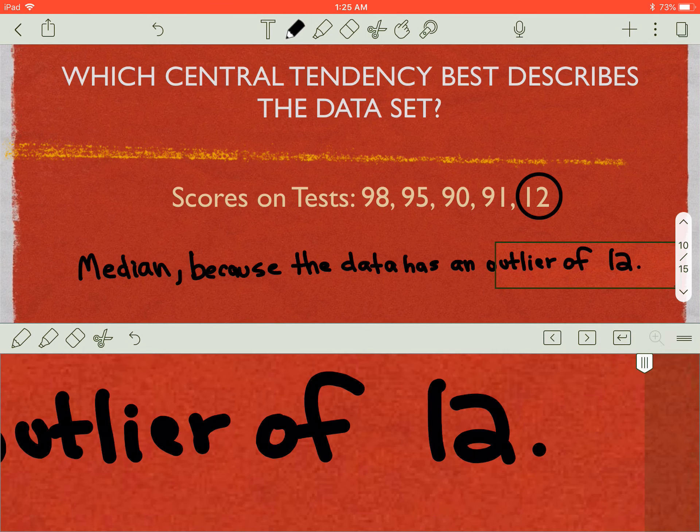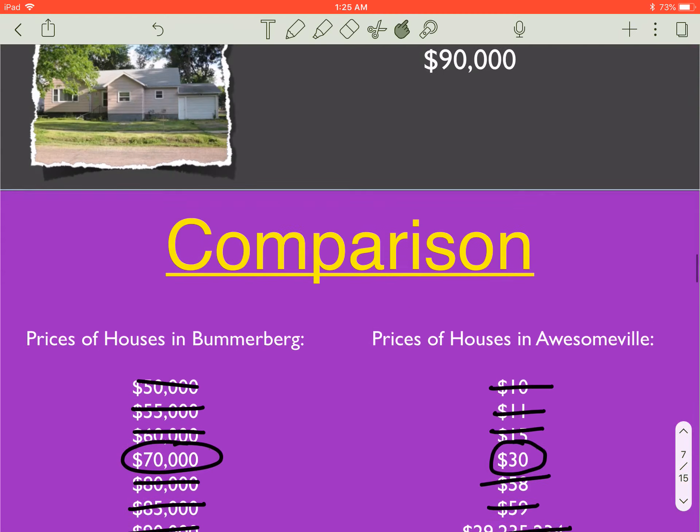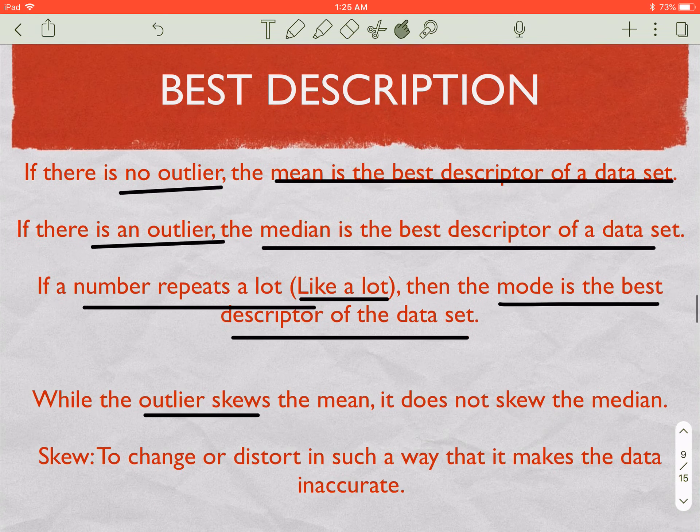And that outlier skews the mean, so we can't use the mean, so we'd have to use the median. Because if we go back up real quick, if I look here, an outlier skews the mean but an outlier does not skew the median. All right, back down.